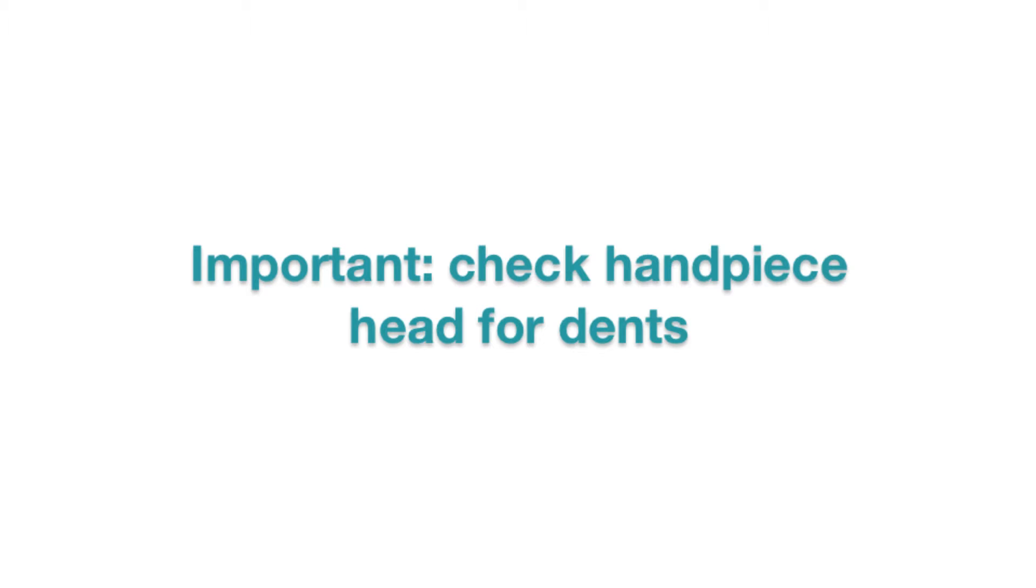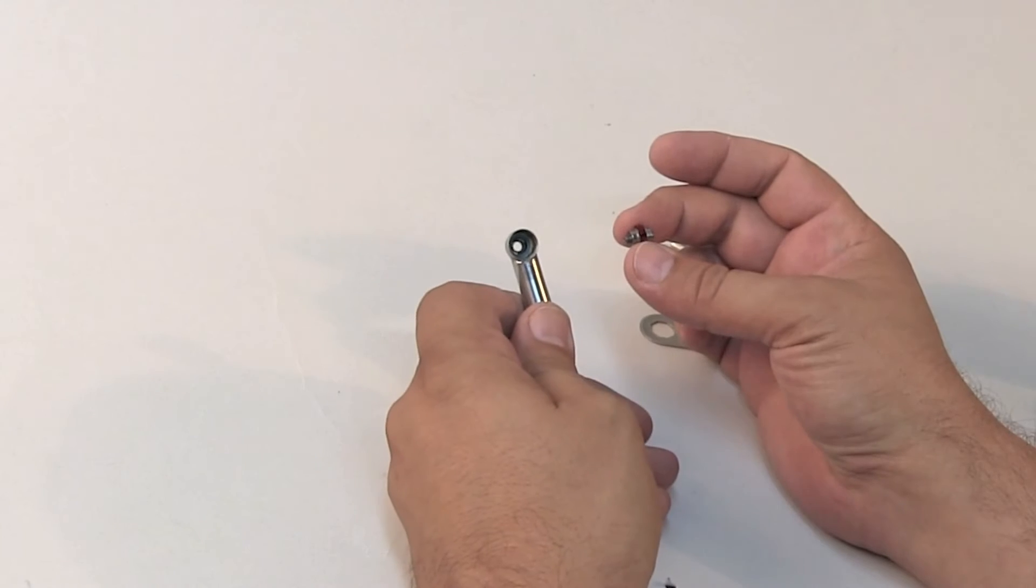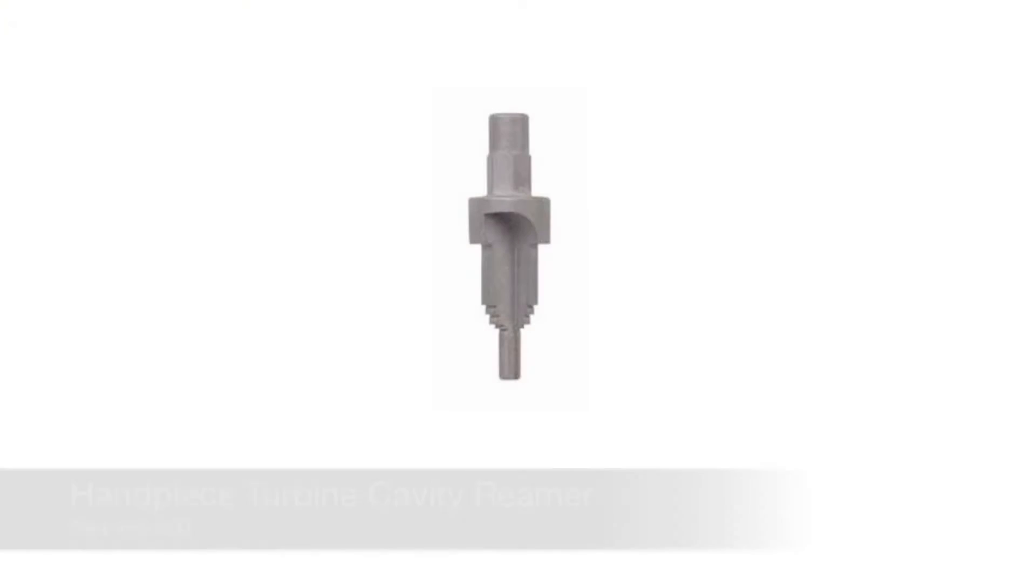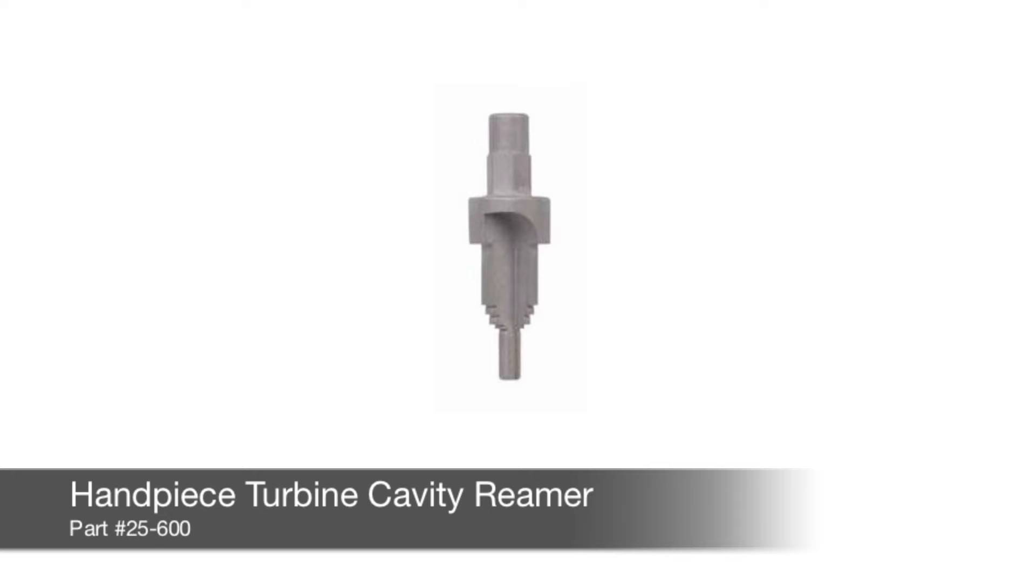Before installing the turbine, be sure to check the handpiece head for dents. If any evidence of dents, send the handpiece to American Dental for repair, or you can repair the handpiece yourself using our handpiece turbine cavity reamer.